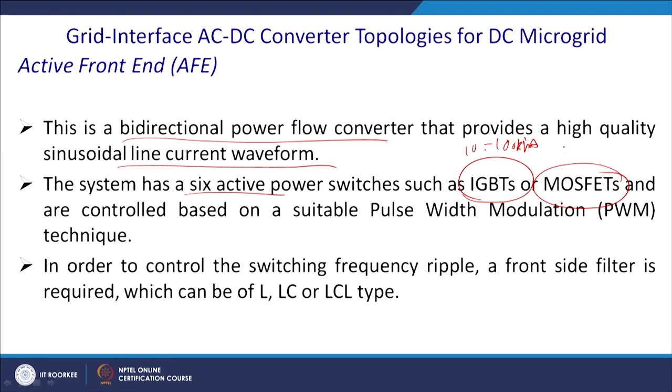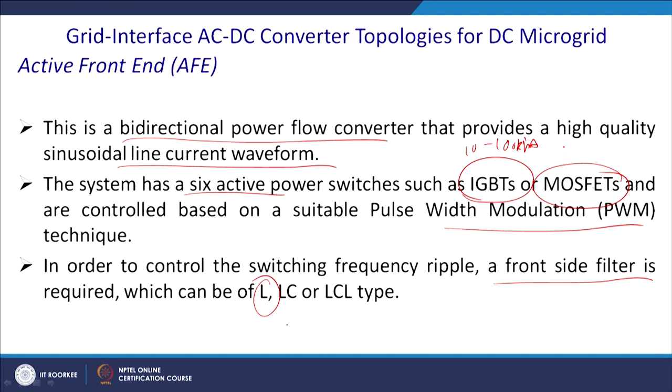The control is based on a suitable pulse width modulation technique — for example, unipolar PWM — which you can refer to from the advanced power electronics course. Different kinds of modulation techniques can be used. To control the switching frequency ripple, a front-side filter is required. Since PWM switching frequency is quite high, the filter size will be small. An L filter gives 20 dB cutoff, an LC gives 40 dB, and an LCL gives 60 dB cutoff, providing proper attenuation of the switching frequency.